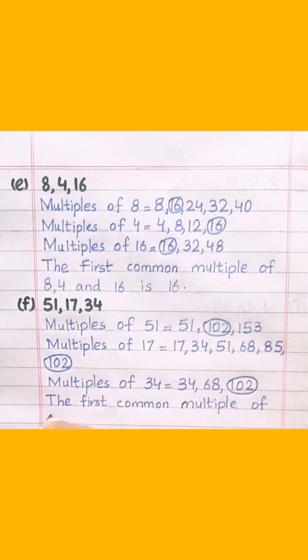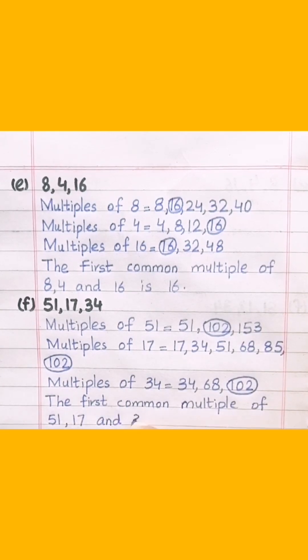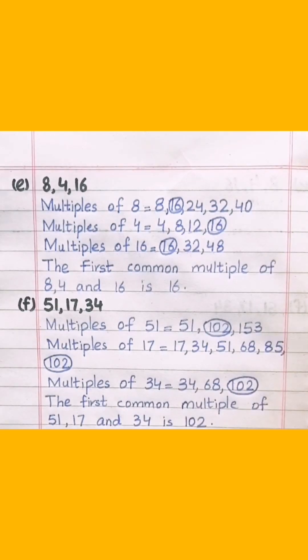The first common multiple of 51, 17, and 34 is 102.